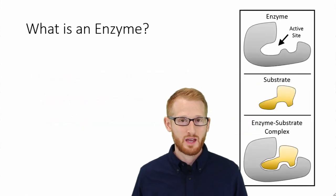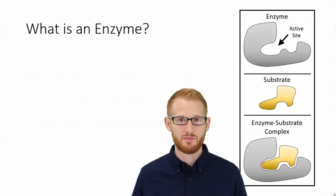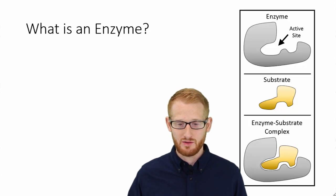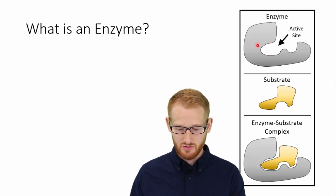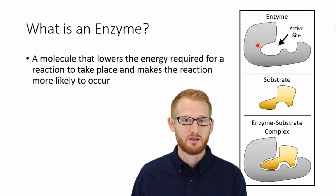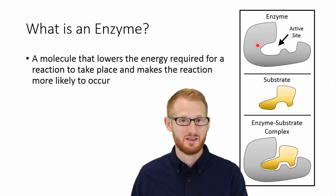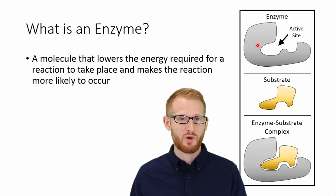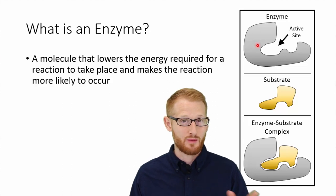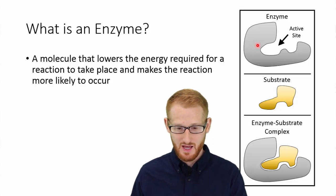Most chemical reactions in the body require an enzyme in order to make them actually occur. So an enzyme is essentially what we have up here — this is an example. An enzyme is something that's going to lower the energy required to make a process initiate. There's always a little bit of energy required in order to make a chemical reaction take place.